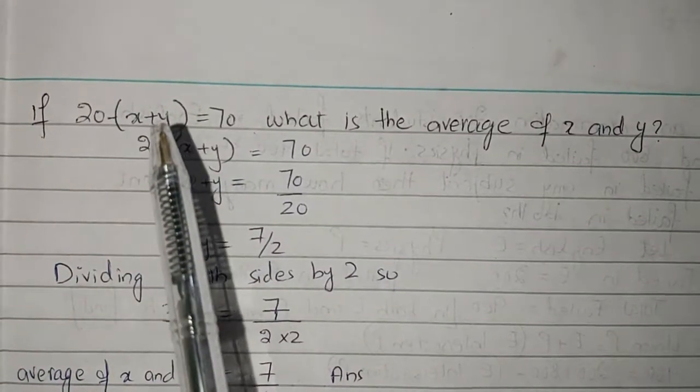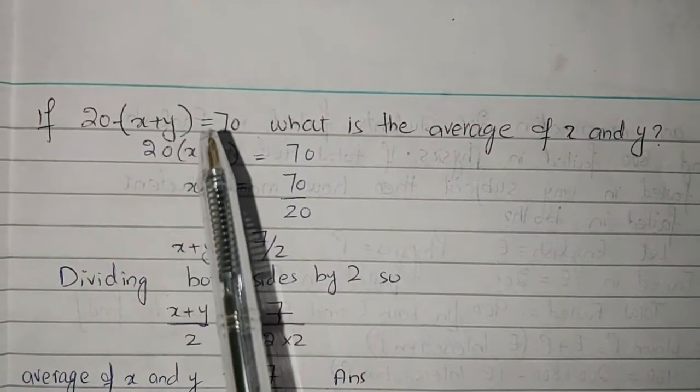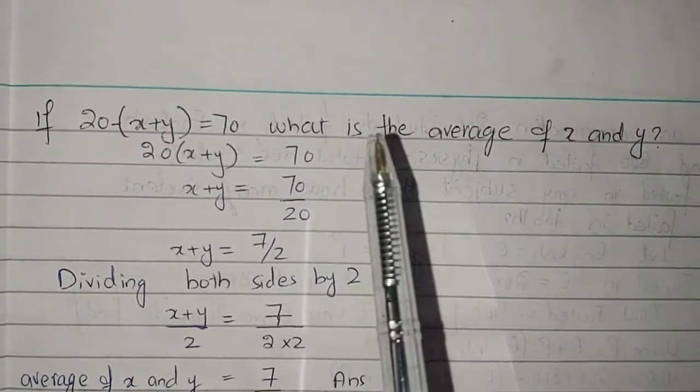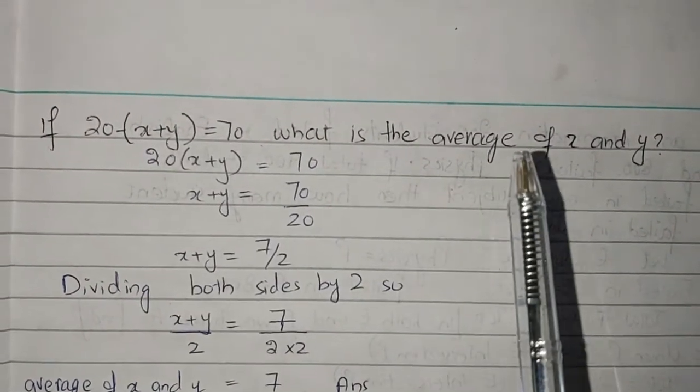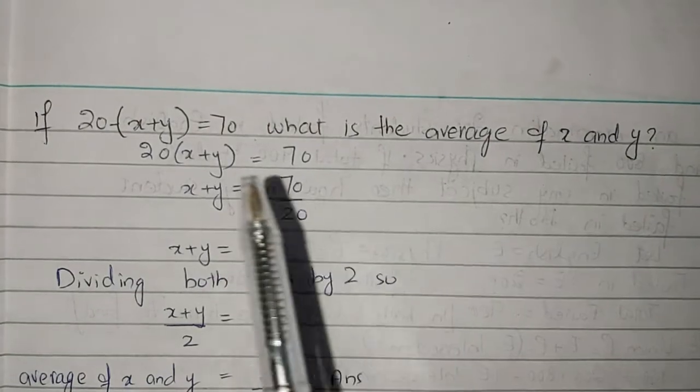If 20 into (x plus y) equals 70, what is the average of x and y?